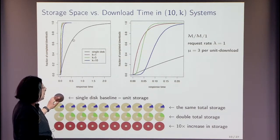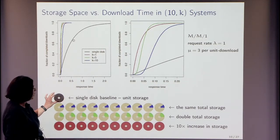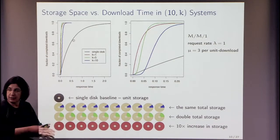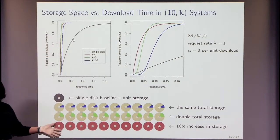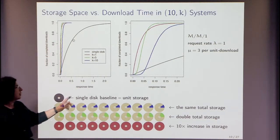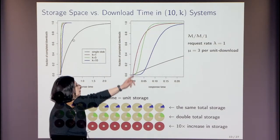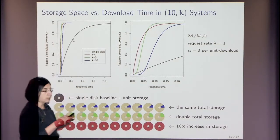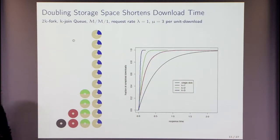The black line here represents no replication — a single server — and the coded systems do much better.